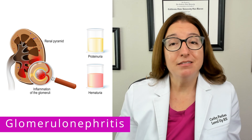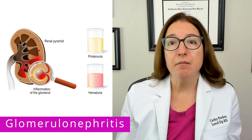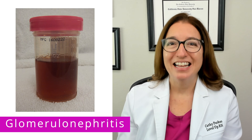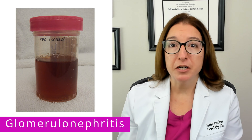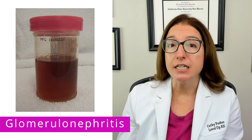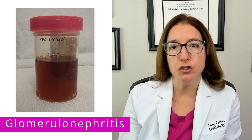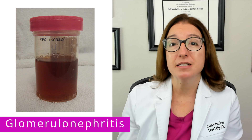In addition, damage to the glomeruli causes the loss of blood and protein in the urine. Signs and symptoms of glomerulonephritis include oliguria — a decrease in urine output — as well as brown cola-colored urine, which is due to the presence of blood in the urine. The patient will also have signs and symptoms of hypervolemia, such as hypertension, dyspnea, crackles, and edema.